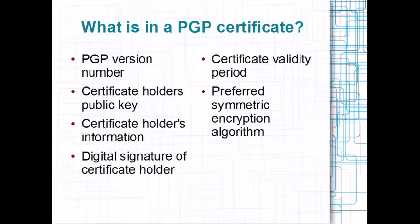One last thing before we conclude: we talked about authentication and we talked about confidentiality. The two of them can be combined if a message needs both. The way they do that is they first sign the message and then encrypt it. When it comes time to read it, they decrypt it and then check the signature to make sure nothing has been changed. So that's PGP in a nutshell — thanks for watching.